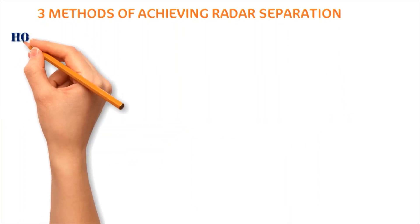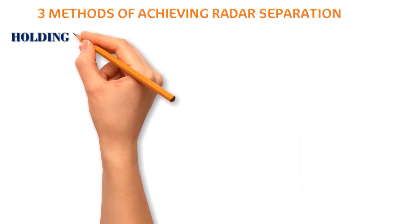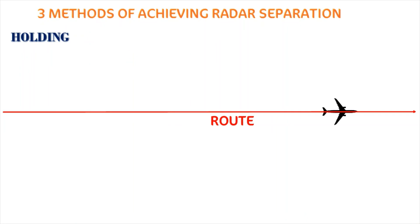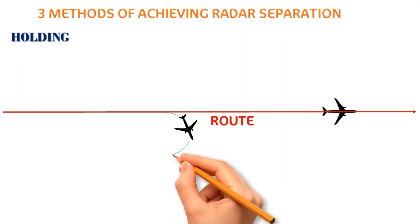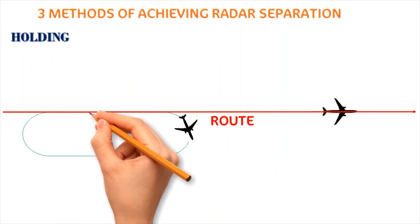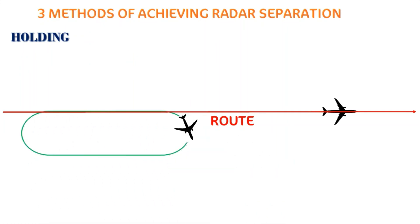The third technique is holding. This is the method of achieving radar separation by making the second aircraft hold in a racetrack pattern until the required separation is achieved with the first aircraft. Once the required separation is achieved, the aircraft is allowed to leave the holding pattern and continue its flight.